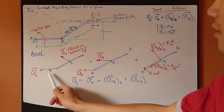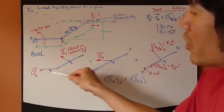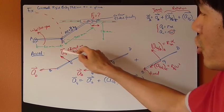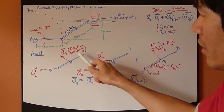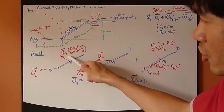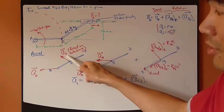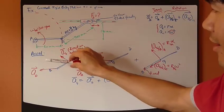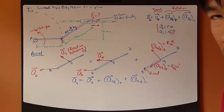So, I have acceleration of B pointing straight to the left, which I found earlier. A_G is the unknown. Now, the direction of G is not known, so we don't know whether it's going to point at any angle at all. And once again, we're going to assume something.